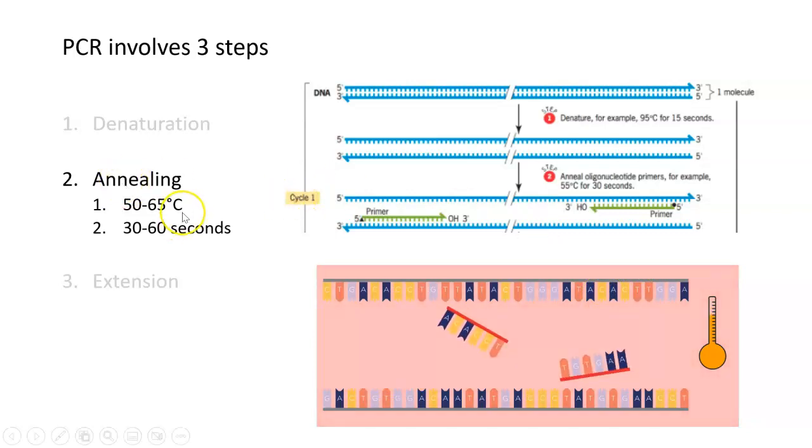The temperature varies for annealing based on the sequence of your primers. Some primers might require a higher annealing temperature, 65 degrees. Some might prefer a lower annealing temperature. But it all depends on the sequence of your primer.